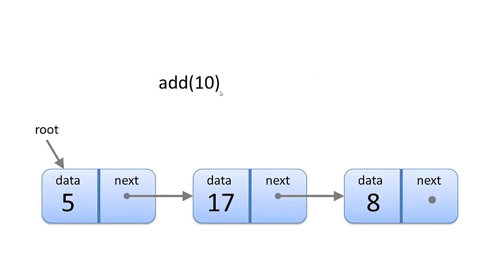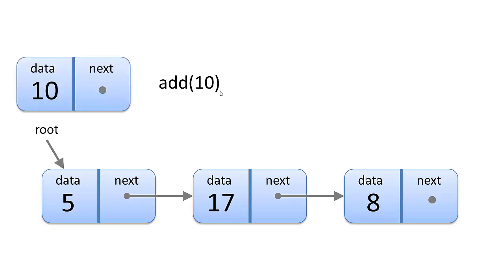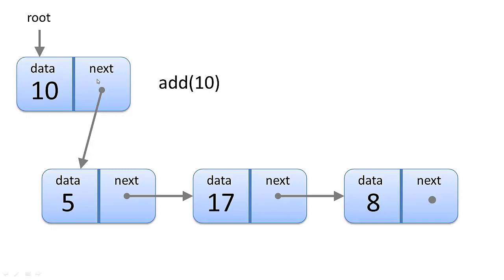Here's our linked list, and we want to add a 10. We create a new node with 10 as the data, then point its next pointer to the current root node. We then move the root pointer to our new node. So we've effectively added the new node at the very beginning of the list and pointed root to it. That's the add operation.